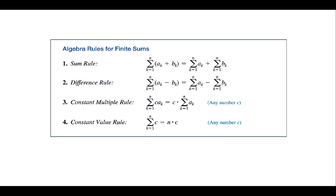These are the algebra rules for finite sums. Sigma notation of a_k plus b_k equals sigma of a_k plus sigma of b_k — you can split on addition or subtraction. If you have a constant times a_k, you can bring that constant outside. The constant value rule: the summation of a constant c from k equal 1 to n equals n times c, because each of the n terms contributes c.